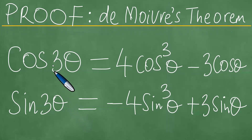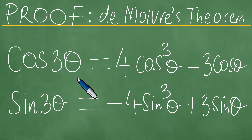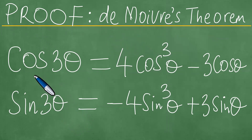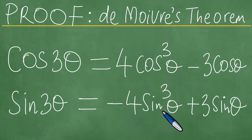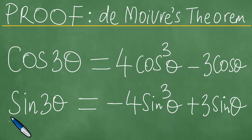We are here and we want to write down the proofs to these particular two trigonometric identities using De Moivre's theorem. We need to prove that cosine 3 theta equals 4 cosine cubed theta minus 3 cosine theta. We also need to prove that sine 3 theta equals minus 4 sine cubed theta plus 3 sine theta. And we present the proofs as follows.